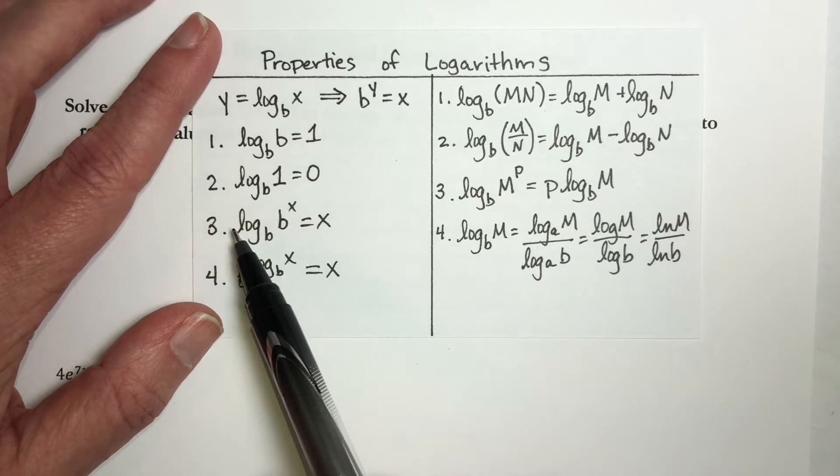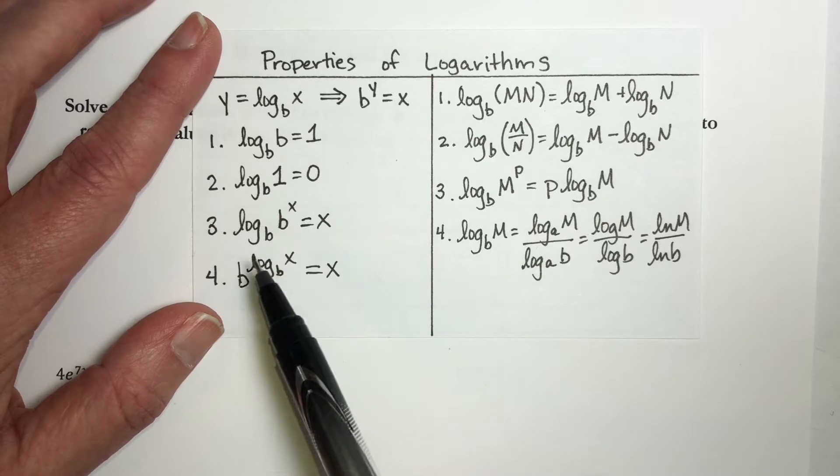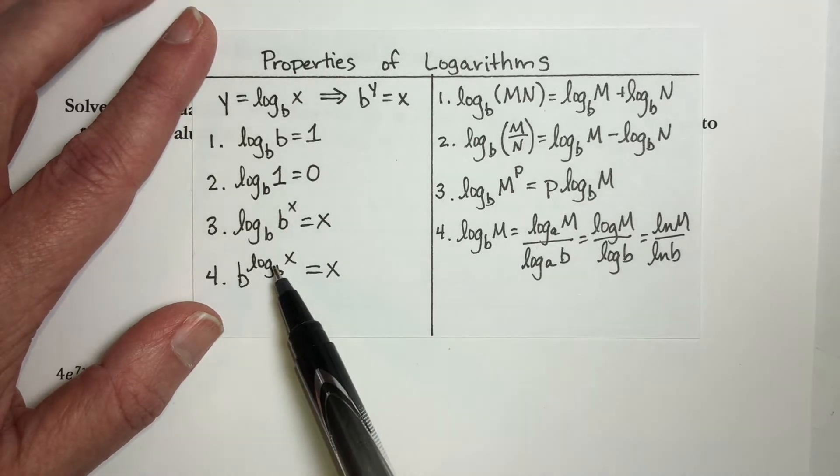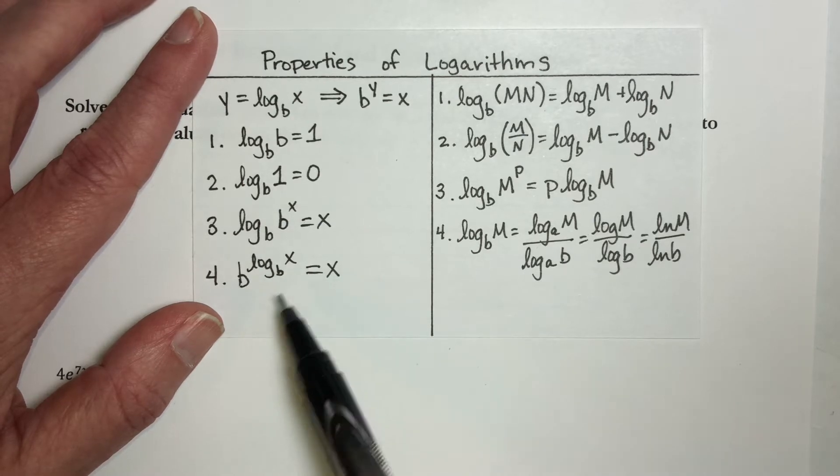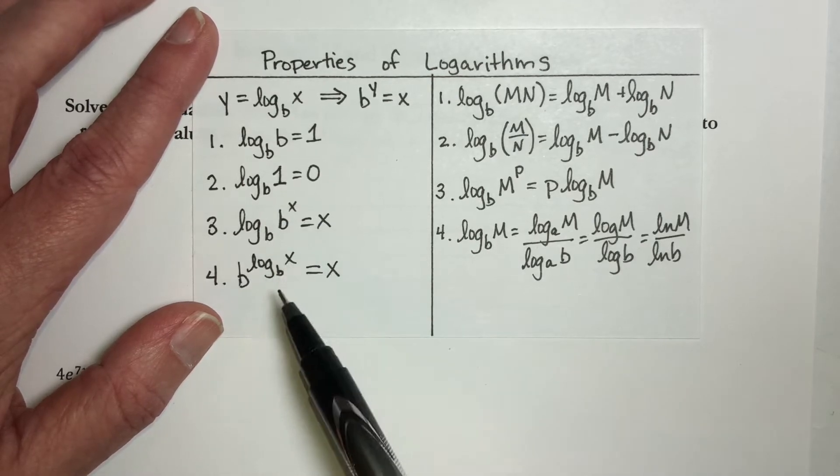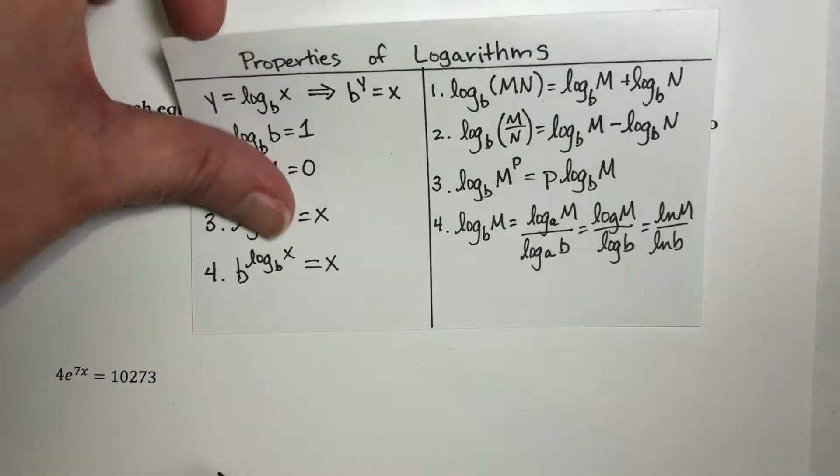A logarithm of base b undoes an exponential of base b. And likewise, an exponential with a log, as long as these bases are the same, they undo each other. So we're going to be using the fact that as long as the base is the same, we have inverse functions and they can undo things.